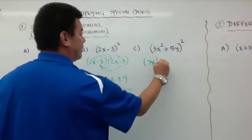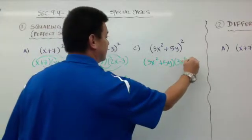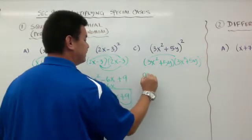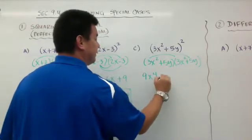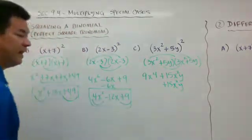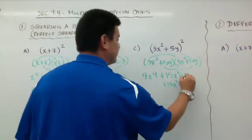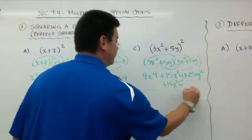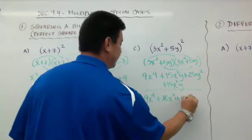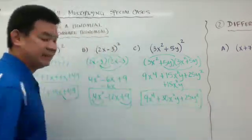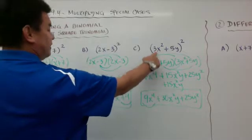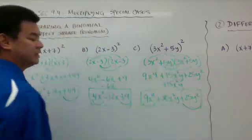Same thing here — now we're going to be using exponents. Rewrite it out twice and do your FOIL. When you do F, you get 9x to the fourth. When you do O, you get plus 15x squared y, and I gives you plus 15x squared y again. When you do L, 5y times 5y is plus 25y squared. When you combine, you get 9x to the fourth plus 30x squared y plus 25y squared. That's still a perfect square trinomial, because the square root of 9x to the fourth is 3x squared, and the square root of 25y squared is 5y.